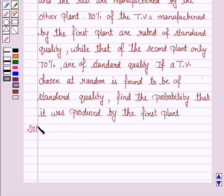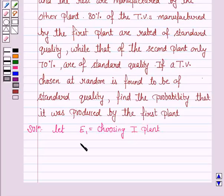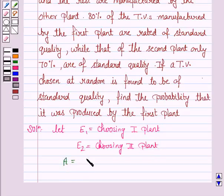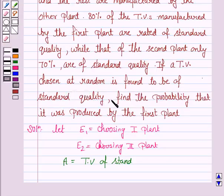Let's move on to the solution. Let E1 be the event of choosing the first plant, since there are two plants to manufacture TVs. E2 is the event of choosing the second plant. And A be the event of choosing a TV of standard quality, since we are given that the chosen TV is found to be of standard quality.